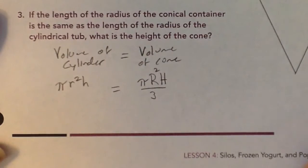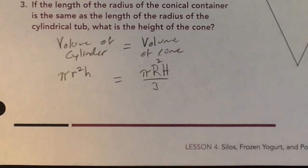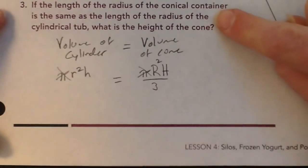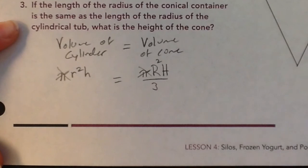So we need these to equal each other. We can take away pi because those are going to be equal. And they're saying, well, let's suppose that the radiuses are the same, in which case we could take out the little r squared and the capital R squared because they would be the same.